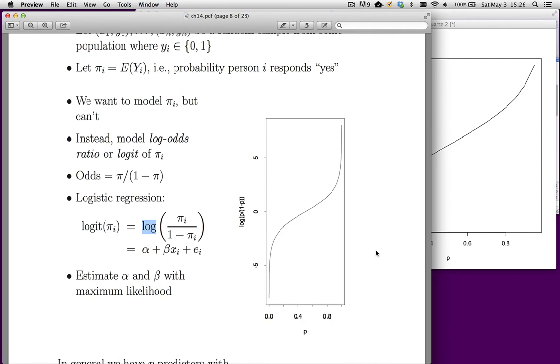So a couple of things that are really important about this graph. First is that it is strictly monotonic. So as p gets bigger, the log odds get bigger and vice versa. So whenever we talk about the log odds getting bigger, that implies p is getting bigger. So in a sense, we can think of these things directly the same.